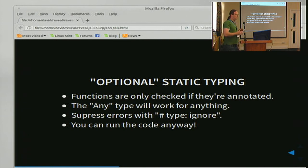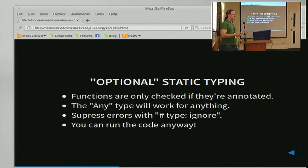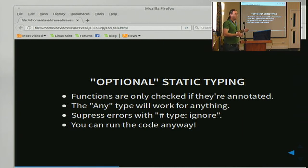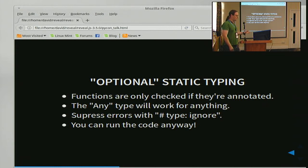So that's basically MyPy — it's optional. The optional aspect comes in about four ways. Firstly, it only checks functions if you annotate them, so if you don't put a return value on a function it treats everything in that code as untyped and doesn't bother checking it. If you've got a function you just can't think how to type annotate, you can ignore it. There's an any type that will work for anything. You can suppress any errors you find with type: ignore. And you can run the code anyway. This means we can get the benefits of static typing where we want it, and still use the dynamic stuff where we prefer it.